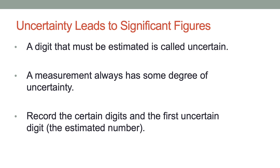Uncertainty leads to significant figures. A digit that must be estimated is called uncertain. A measurement always has some degree of uncertainty — record the certain digits and leave the first uncertain digit as an estimated number.